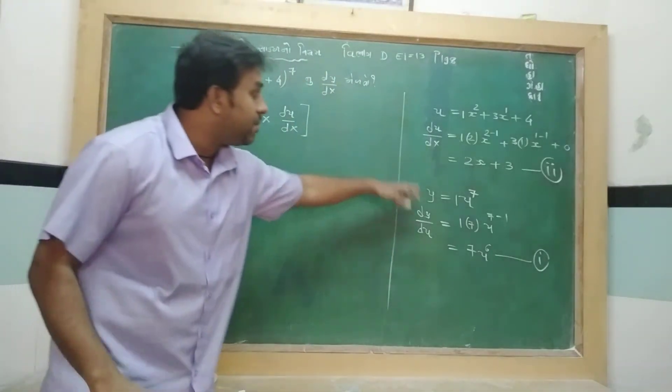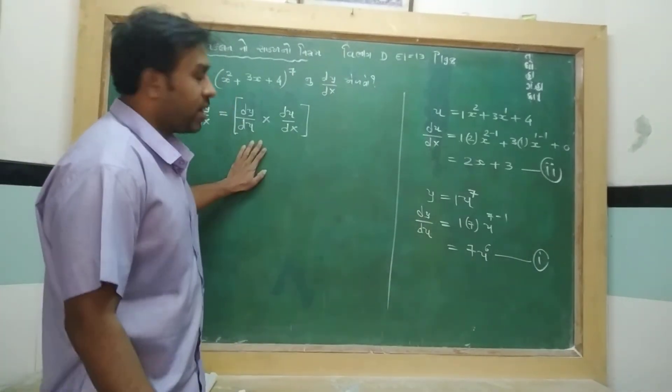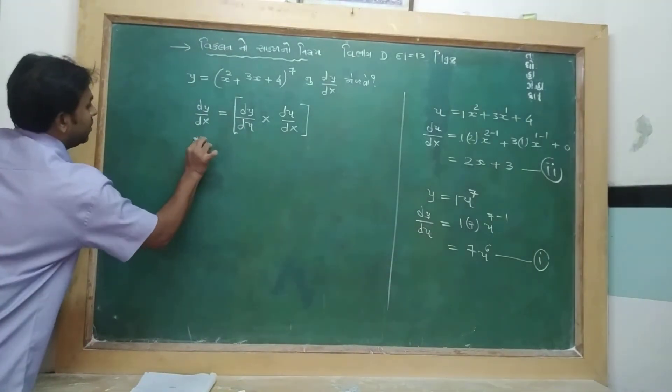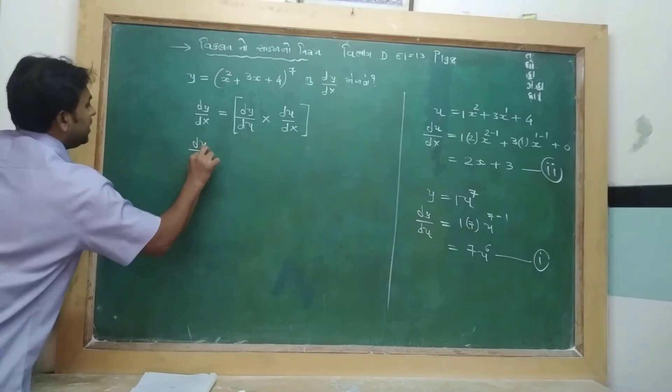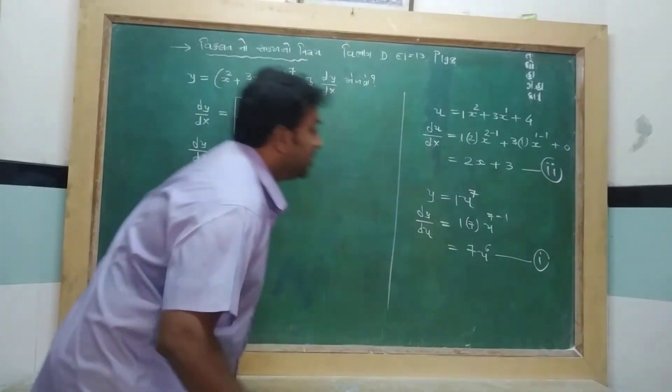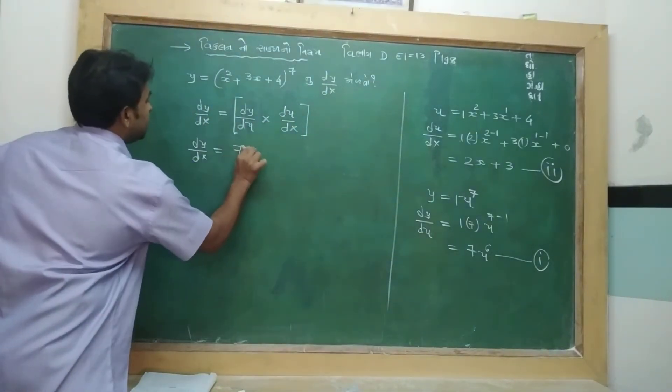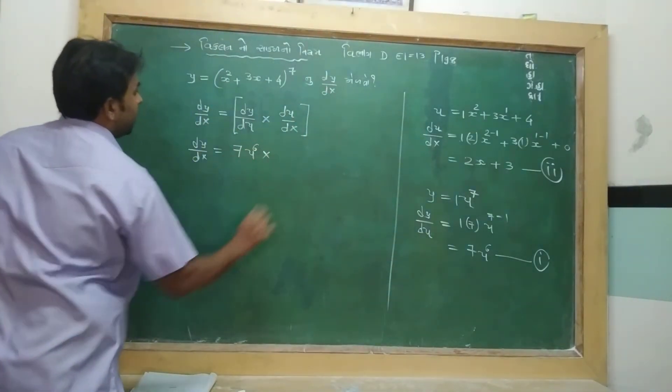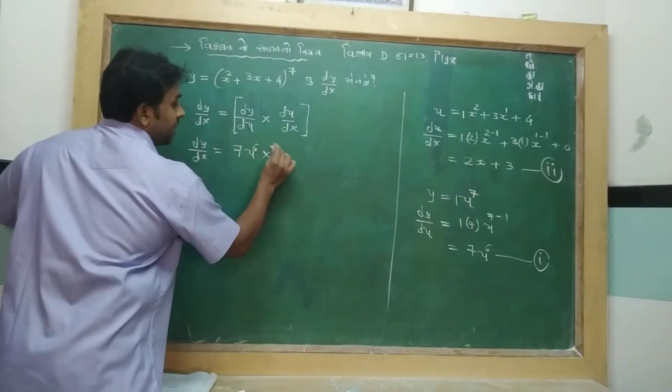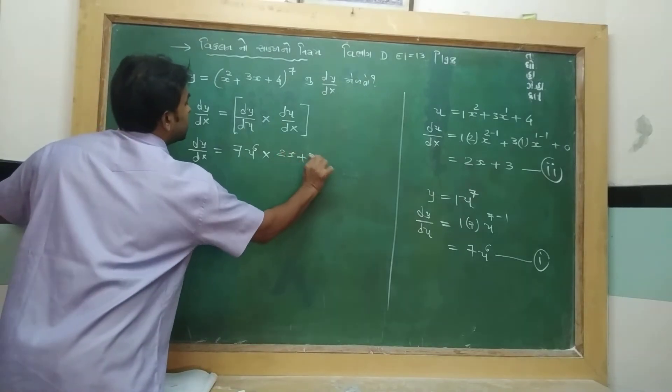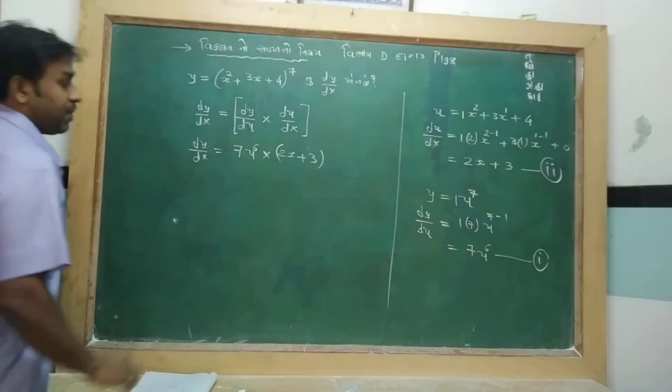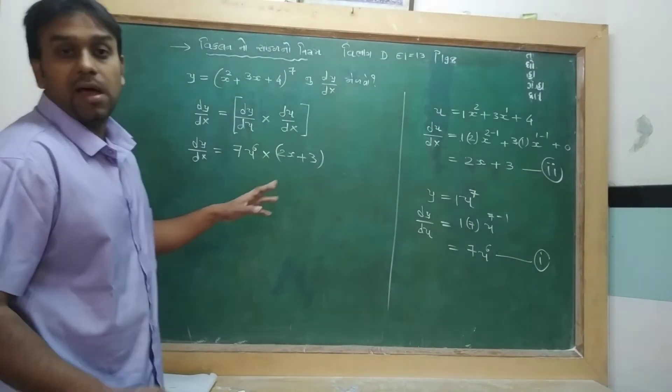If this person will be ill, then we have to fill up then. So dy upon dx is equal to dy upon du, 7u to the 6 power, du upon dx, multiply 2x plus 3. So dy upon dx.